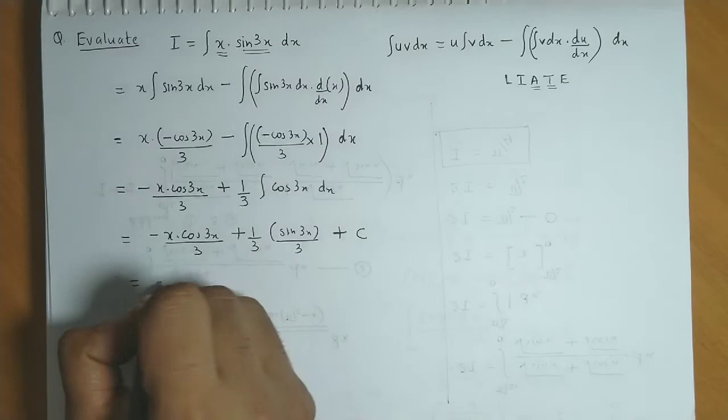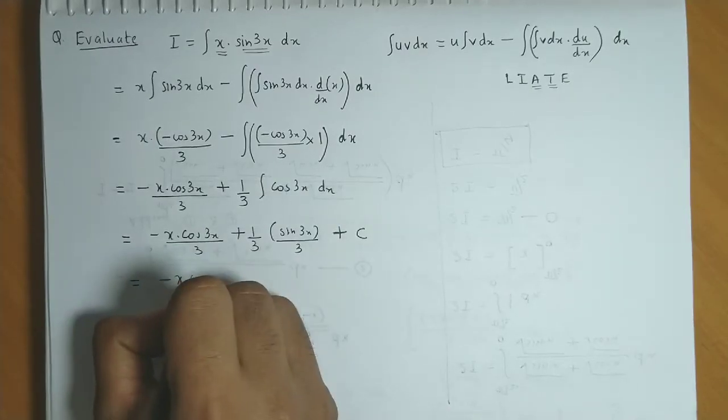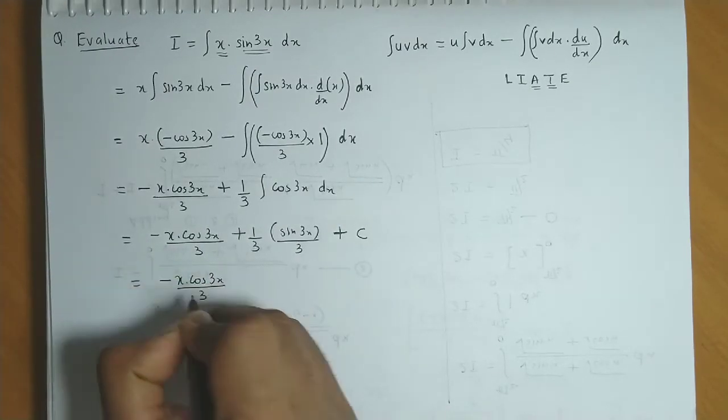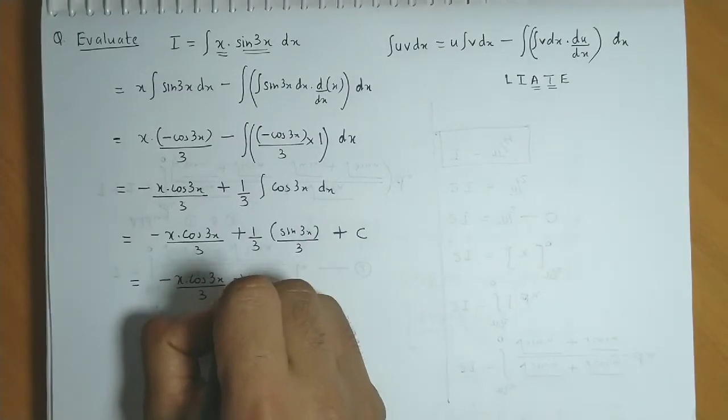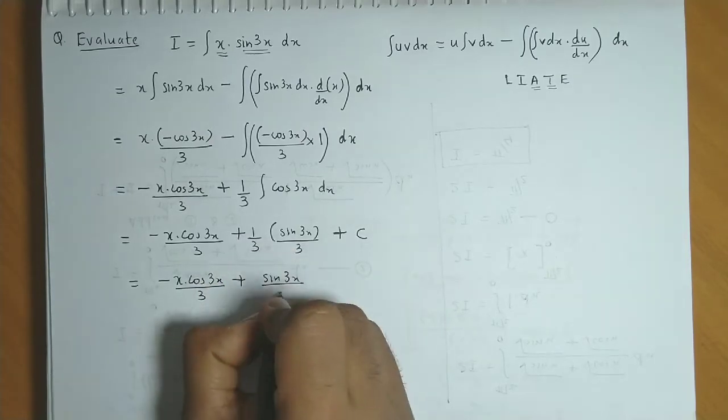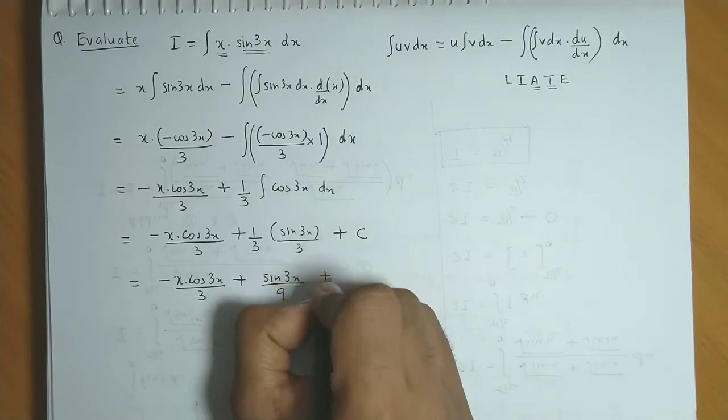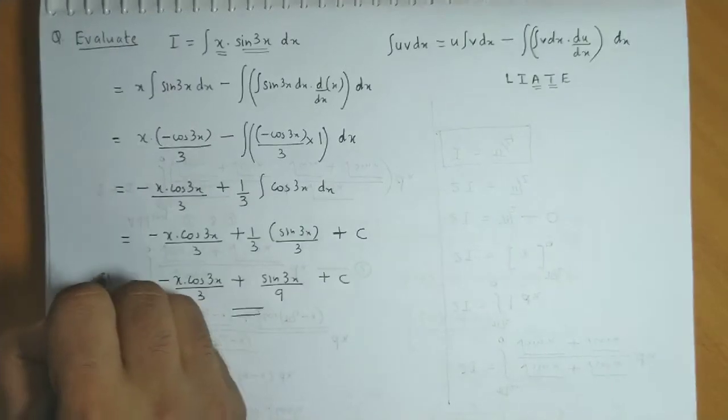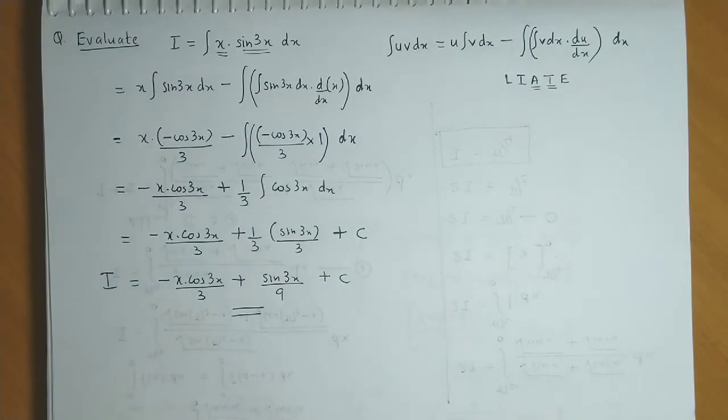So finally we obtain minus x times cos 3x upon 3, plus sine 3x upon 3, 3 gives 9, plus C. So this is the required integral value.